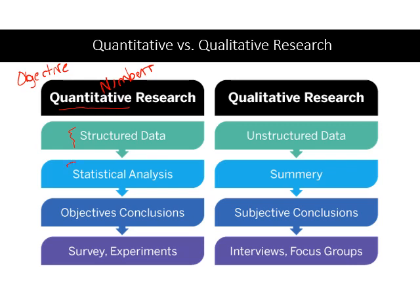We'll be doing statistical analysis, which allows us to look for significant differences that can generalize to a population. We can draw conclusions that are objective, meaning the conclusions are the same regardless of the interpreter. We might do things like surveys or experiments to gather numbers that we can use for our quantitative research.